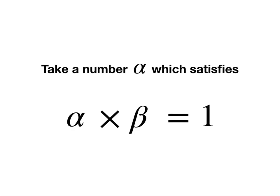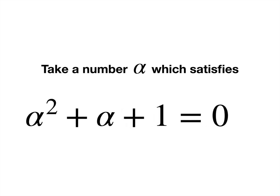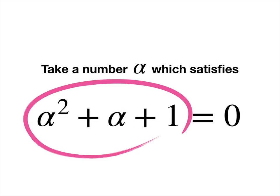We got alpha by saying, take a number which, when multiplied by itself plus 1, which we call beta, is equal to 1. Then we said, that's the same as asking, alpha squared plus alpha equals 1. I'm going to fiddle with this for the very last time by adding 1 to both sides. Well, the right-hand side, now we just have 2, and that's the same as 0. This expression on the left is what we call a polynomial. These turn out to be the key ingredient in these constructions.